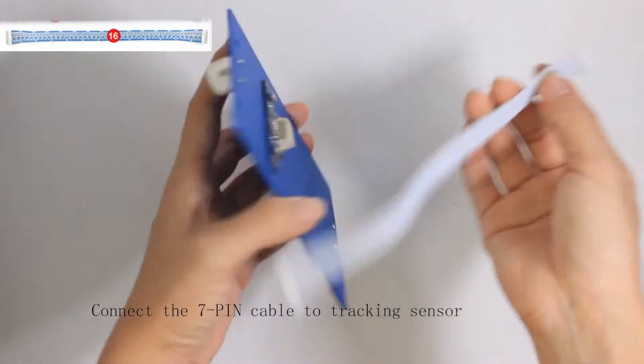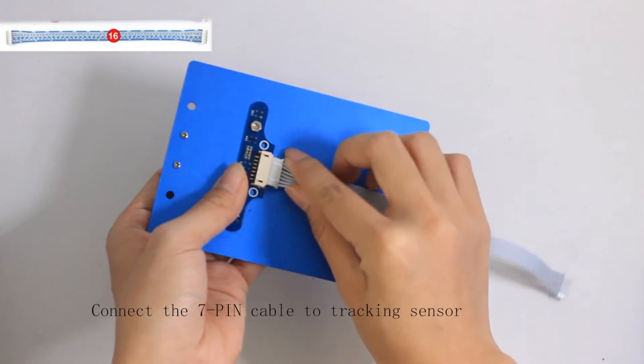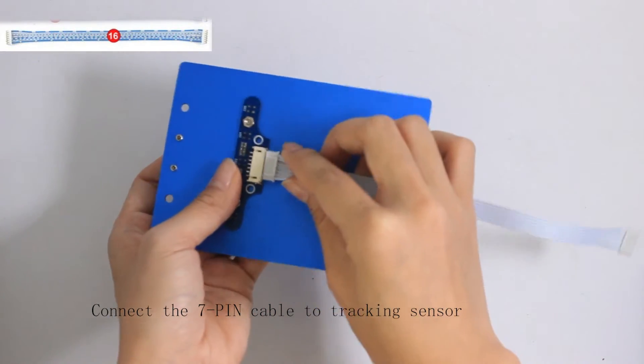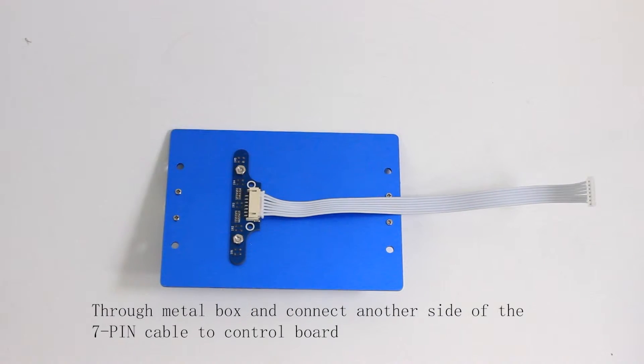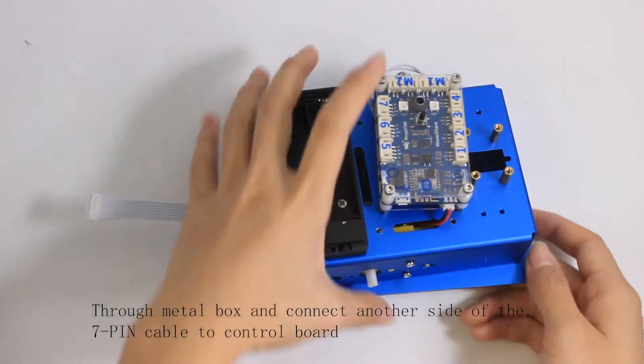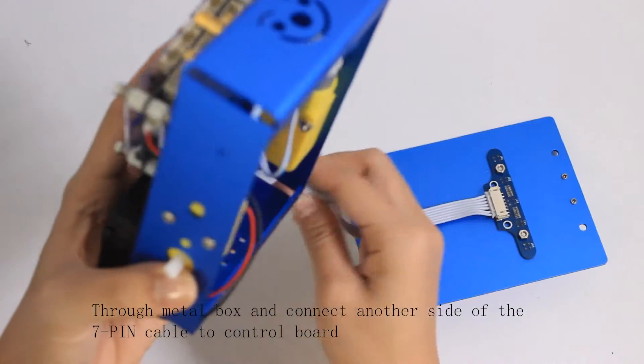Connecting the 7-pin white cable to sensors through metal box and connect another side of cable to control board.